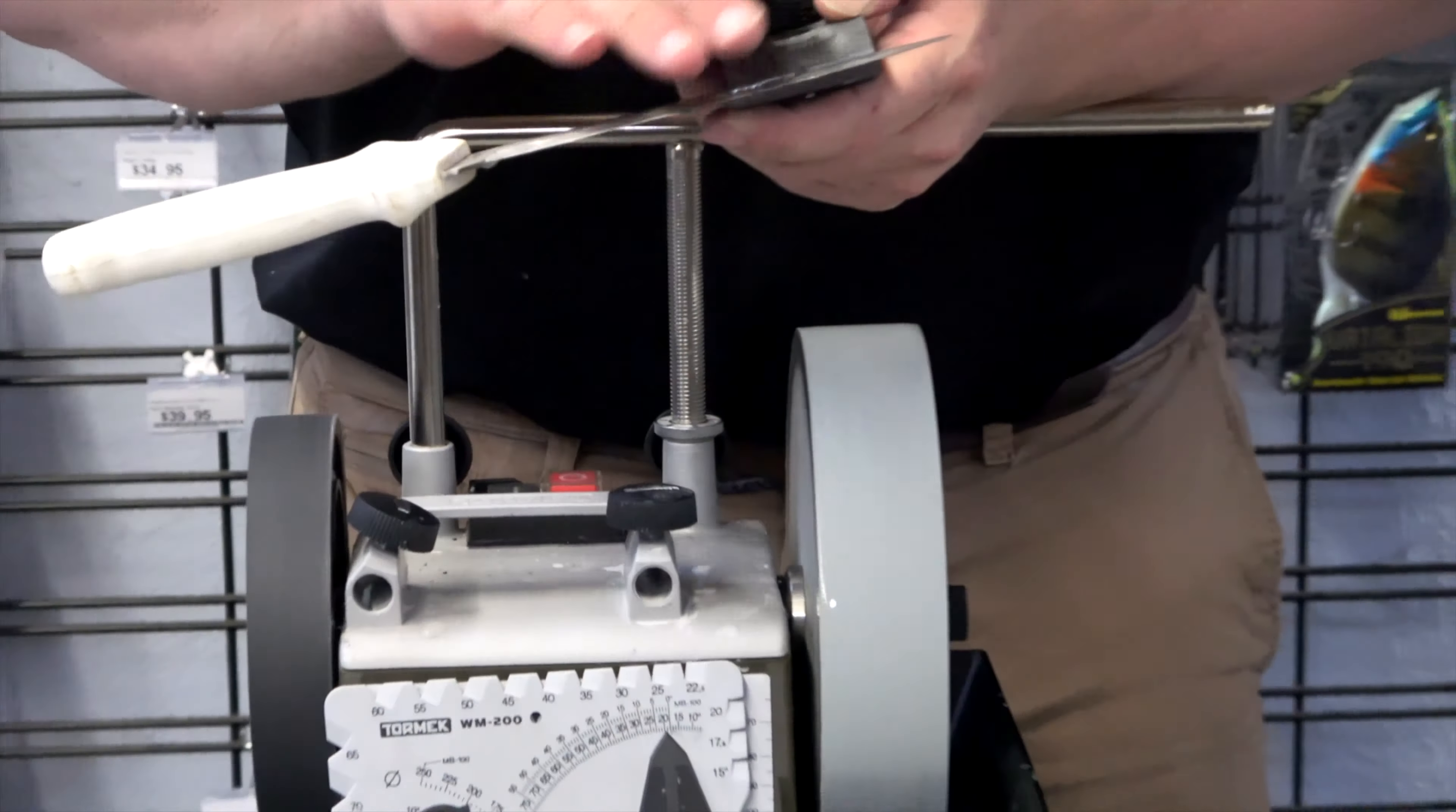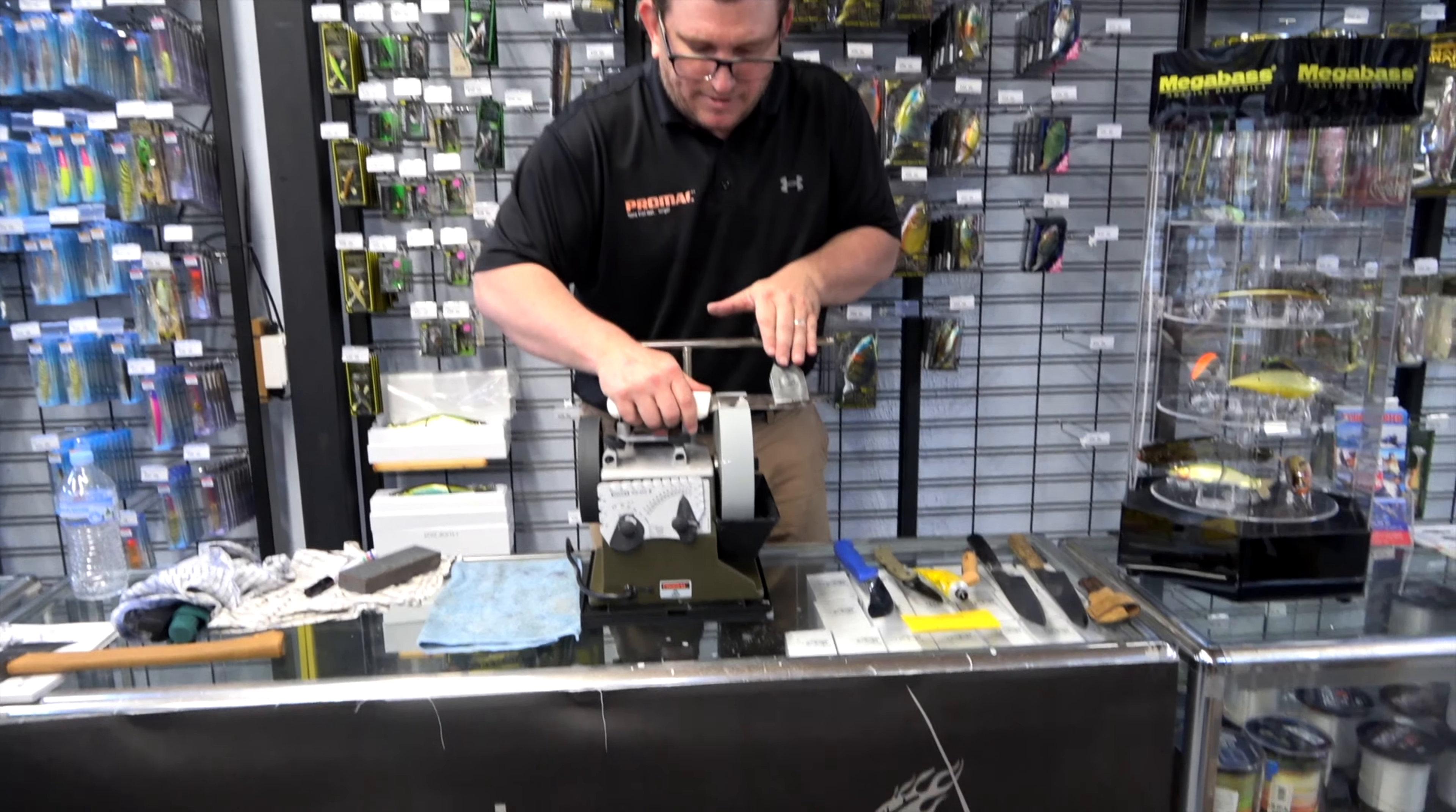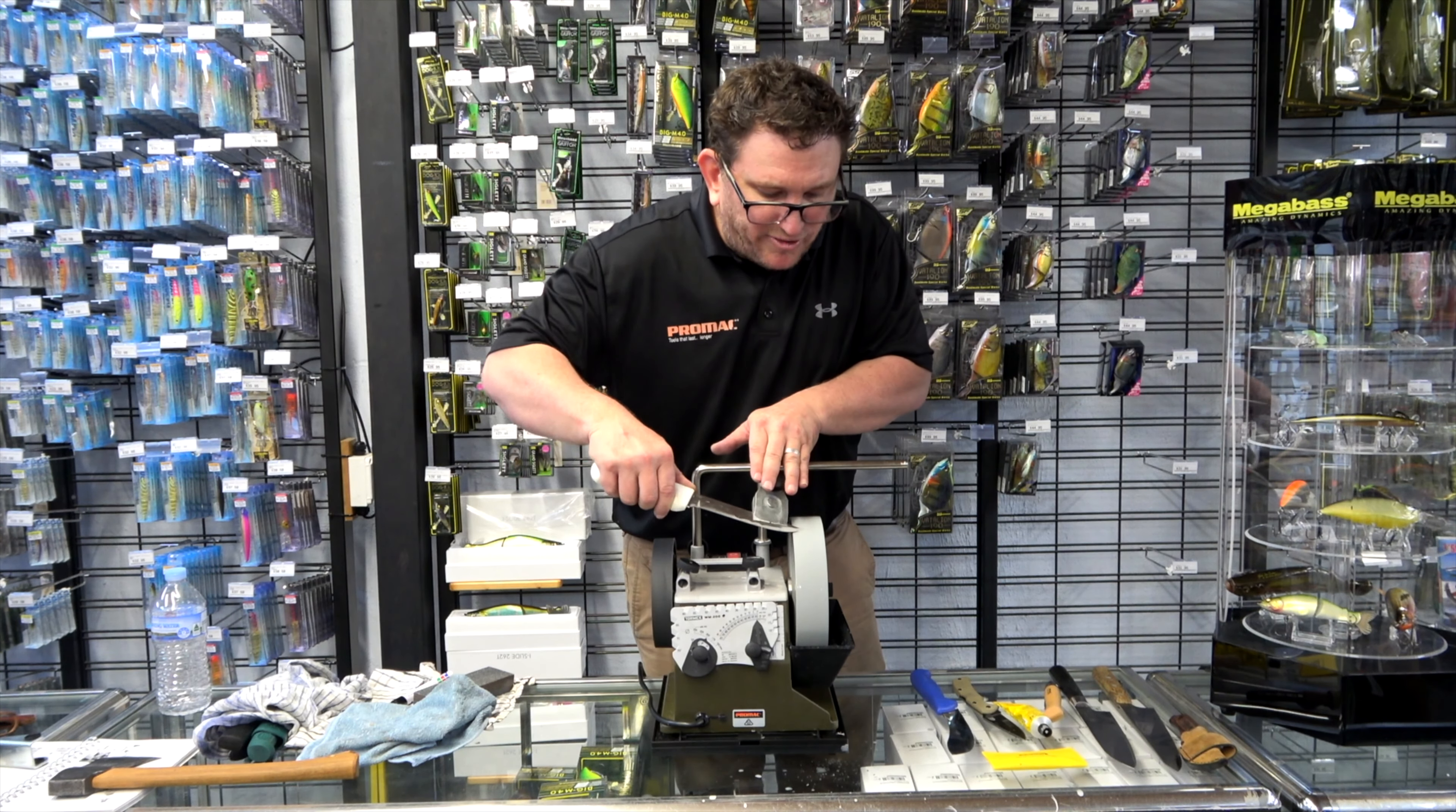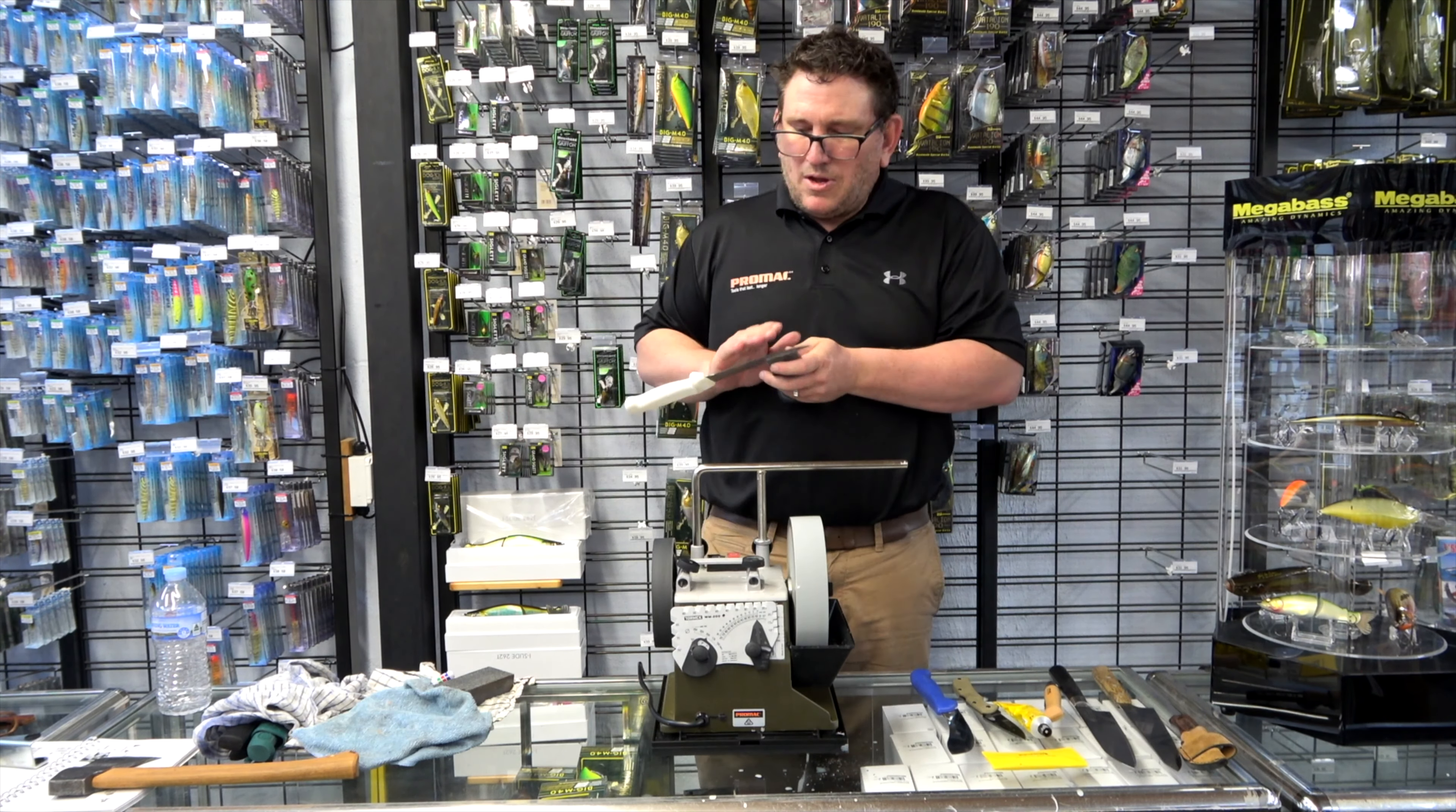We want to keep working until we start creating a burr along the edge of the knife. So we're not quite there yet. Now you don't need to apply a lot of pressure to the wheel. As long as the knife meets the wheel, you'll be able to create the edge.